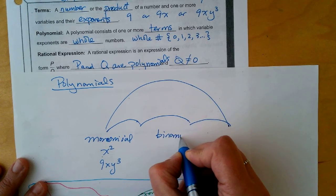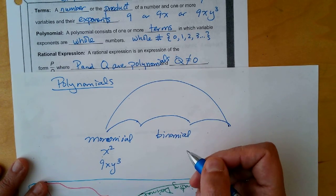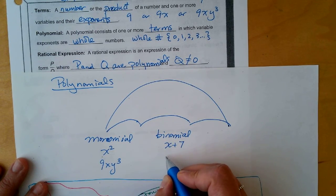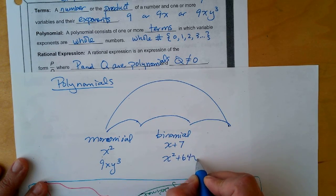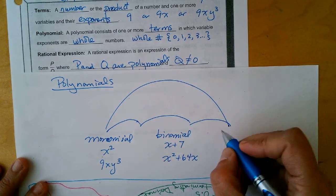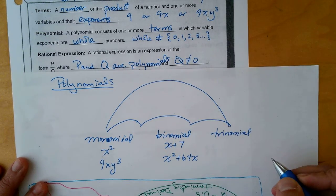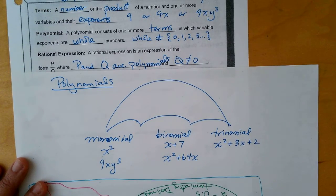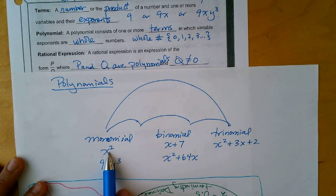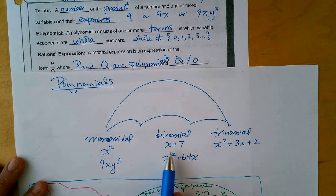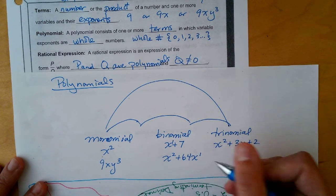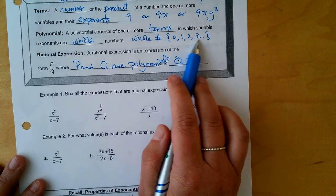You could also have a binomial, which has two terms, and then a trinomial, which has three terms. Something like x squared plus 3x plus 2 could be a trinomial. Notice all of these have whole number exponents — the exponent on x is 1, which is a whole number. So all exponents have to be positive whole numbers.